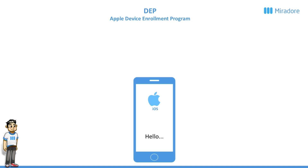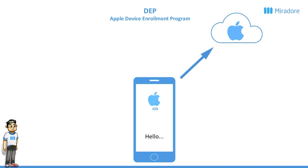Then you'll have to choose a region and a language, and after that the device will force you to go online, either through Wi-Fi or through connecting mobile data. This is because the device wants to get in touch with Apple to check that it is activated, and if it's connected to an iCloud account. But it also asks the question: is it DEP or not.